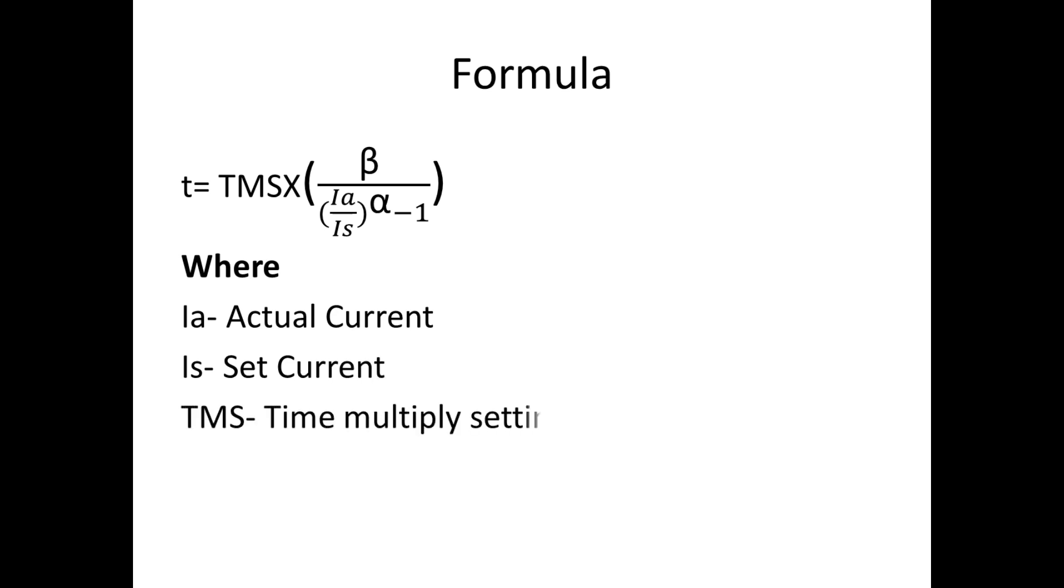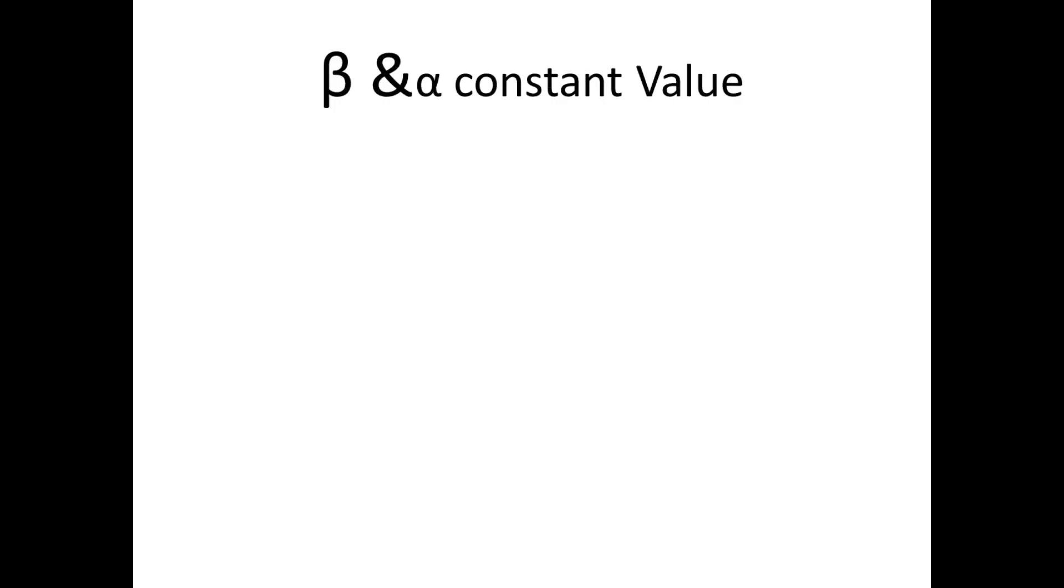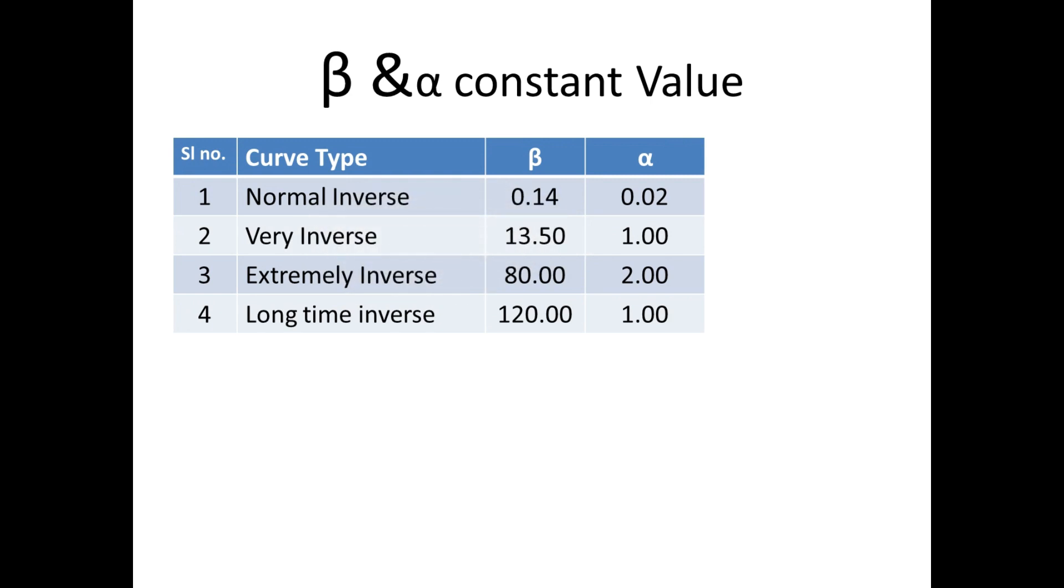Alpha and beta are constants which depend on curve type. These values are: for normal inverse beta is 0.14 and alpha is 0.02. For very inverse beta is 13.5 and alpha is 1. For extremely inverse beta is 80 and alpha is 2. For long time inverse beta is 120 and alpha is 1.